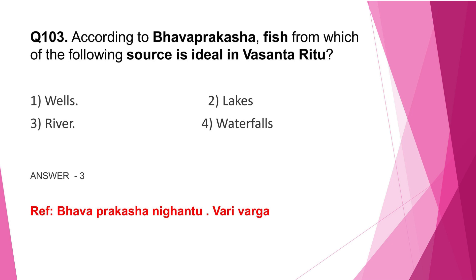Question number 103: According to Bhava Prakasha, fish from which of the following source is ideal in Vasanta Ritu — wells, lakes, river, or waterfalls? The correct answer is option 3, river, that is Naadeya Matsya. Also note the Matsya upayoga according to other Ritus: fish from Koopa or well during Hemanta Ritu, fish from lake or Tadaga during Varsha Ritu, etc. Also note the Jala upayoga according to Ritu — for example, Naadeya Jala or Hamsodaka should be used during Sharat Ritu.